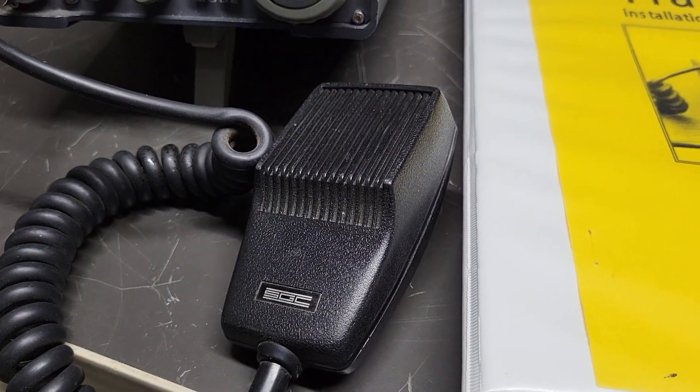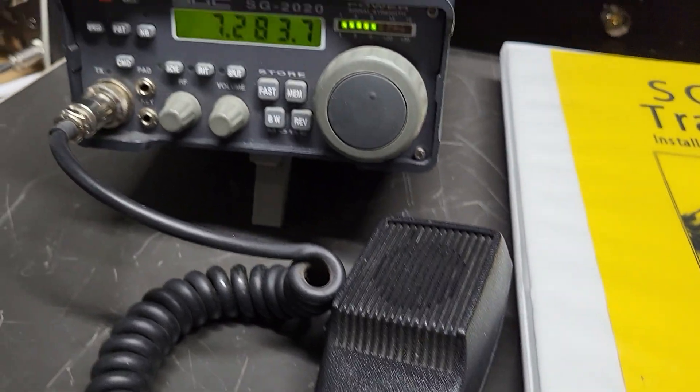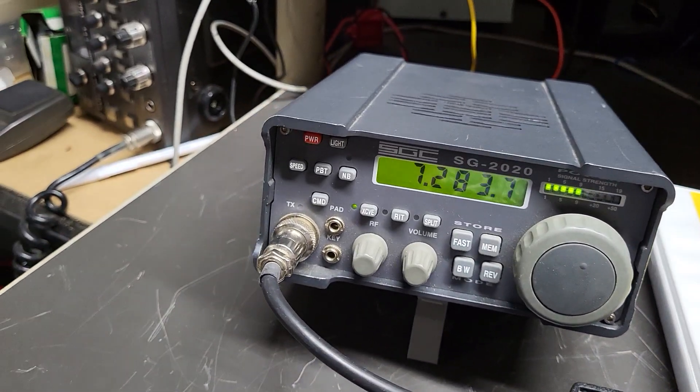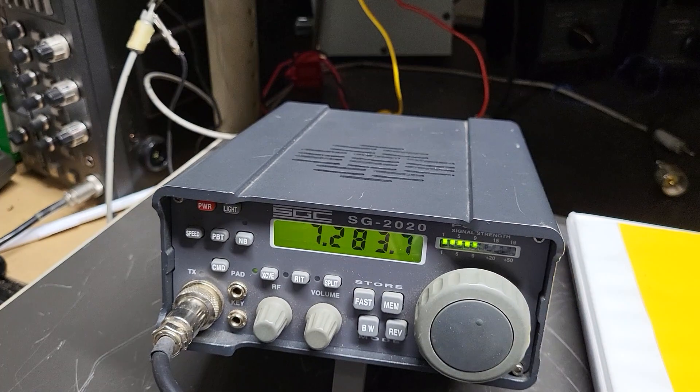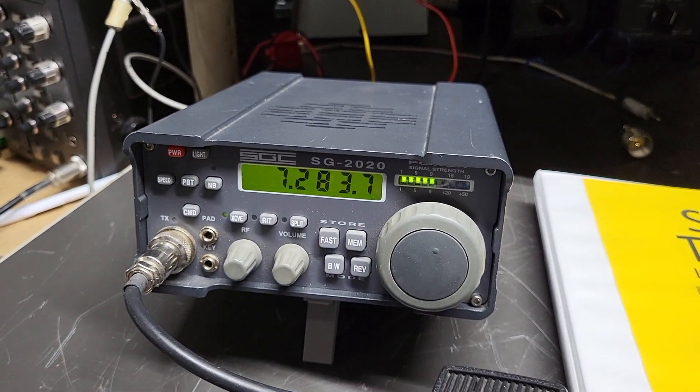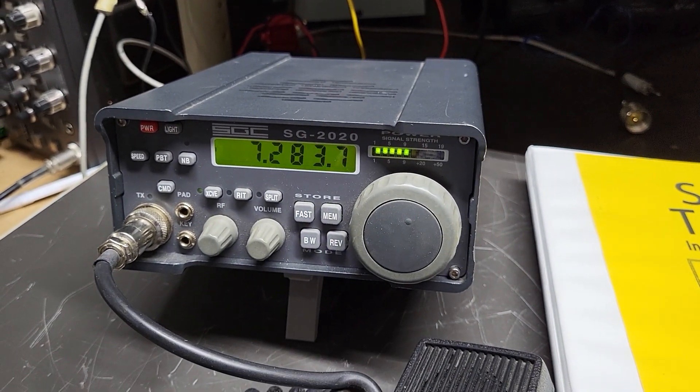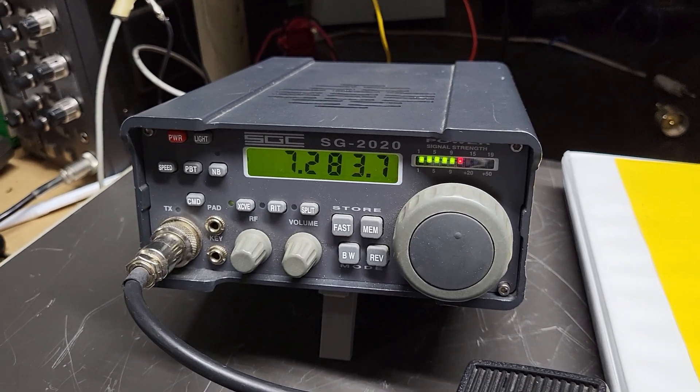It comes with the original hand mic as you can see there. It has a fairly short power cord with a fuse in the back and a fuse in line. It's a power pole-type connector on the end.